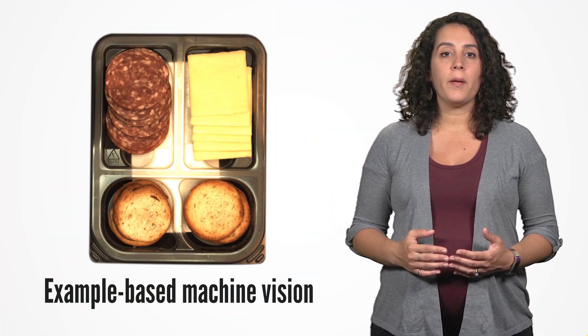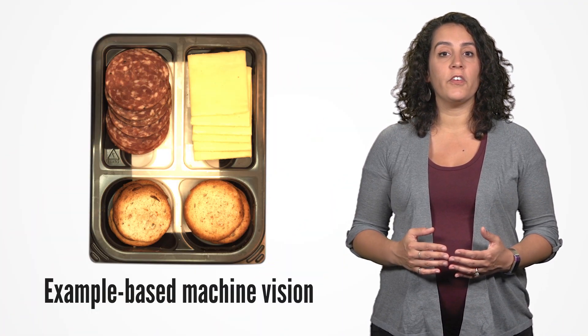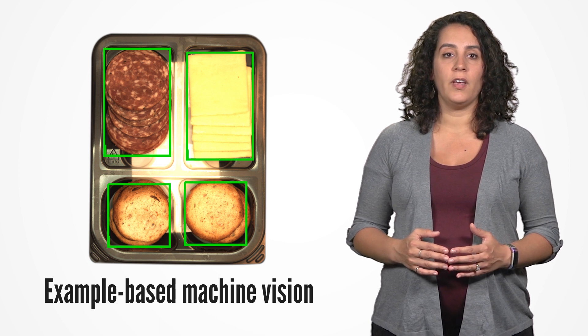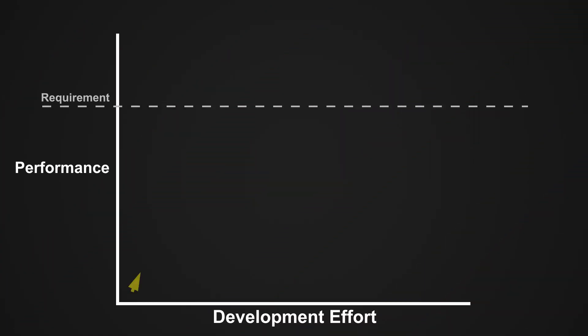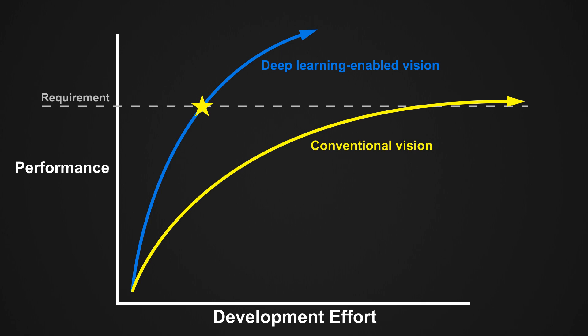But just like before, by providing a deep learning-enabled vision system with enough sample images, it can locate and identify parts with ease. For applications with this level of nuance, deep learning can often perform better and faster than other vision technologies at the same task.